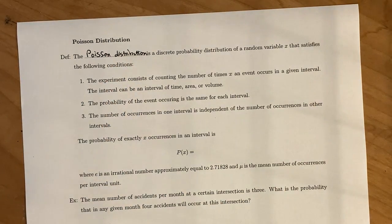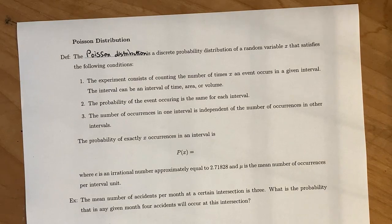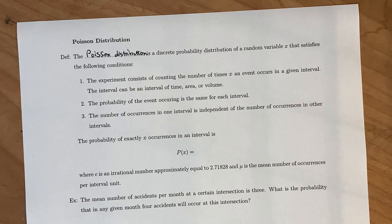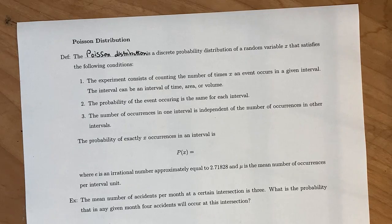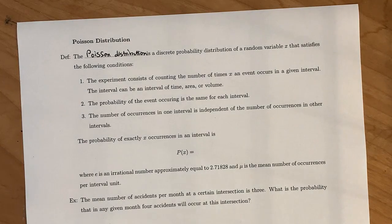It's a discrete probability distribution of a random variable x that satisfies the following conditions. The first one is the experiment consists of counting the number of times an event x occurs in a given interval. This interval could be an interval of time, area, or volume — x is just counting how many times an event occurs.